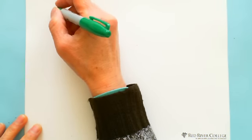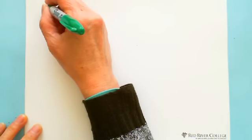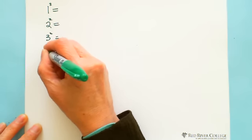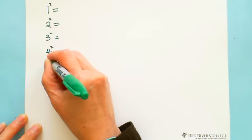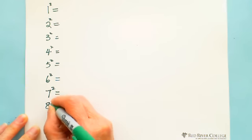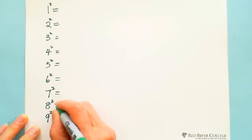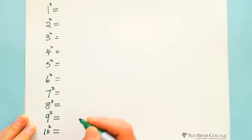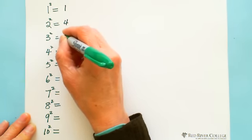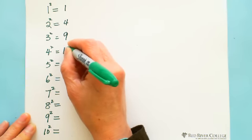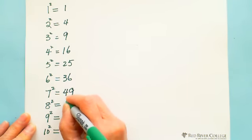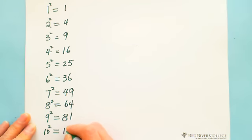Let's review together. One square, two square, three square, four square, five square, six square, seven square, eight square, nine square, and ten square. So we can write: one squared equals one, two squared equals four, three squared equals nine, four squared equals sixteen, five squared equals twenty-five, six squared equals thirty-six, seven squared equals forty-nine, eight squared equals sixty-four, nine squared equals eighty-one, and ten squared equals a hundred.